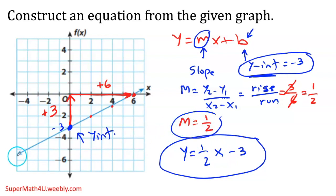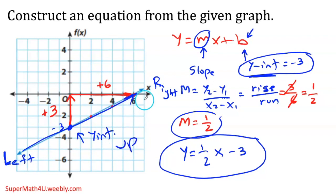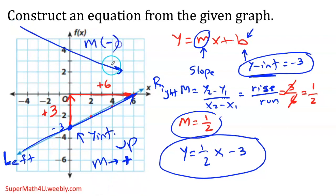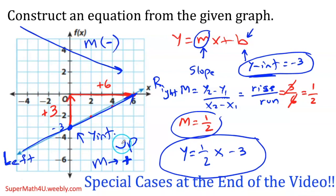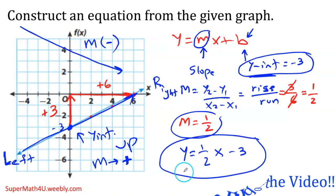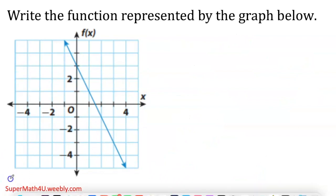Notice that my slope is positive when the line goes up from left to right. If the line is going down, the slope is going to be negative. We're done with this problem. Don't forget the special cases — stay until the end of this video. For the next problem, I have a line going down from left to right, so the slope is going to be negative.